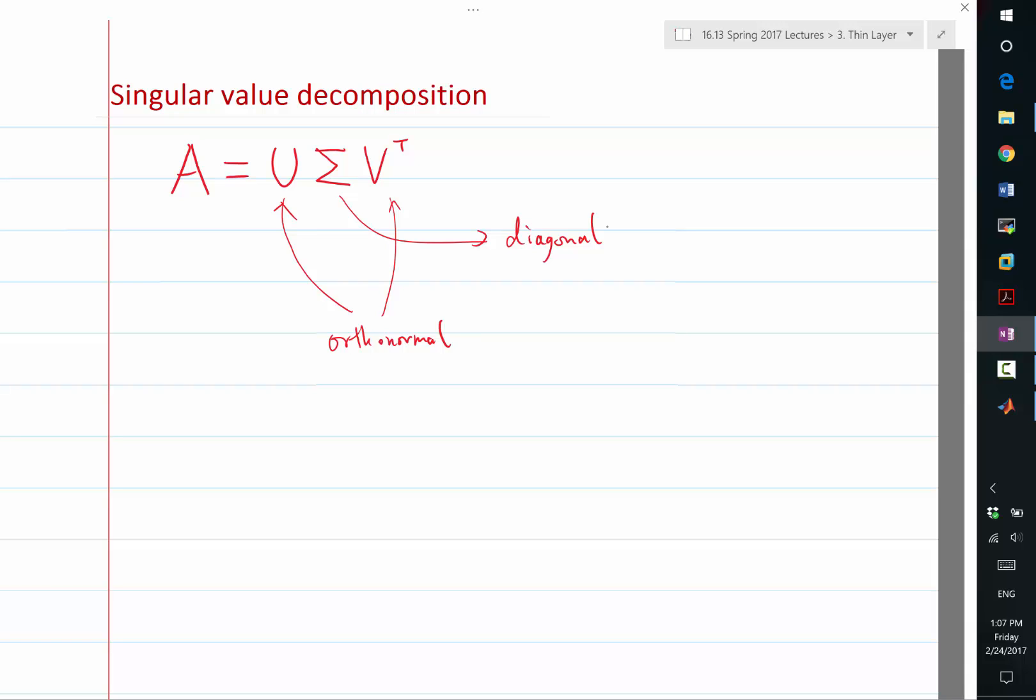It is very useful in identifying the null spaces of the matrix A. Why is that? So let's imagine A, like in our application, is a matrix that is short, it's shorter than its width, right? So if A is like that...